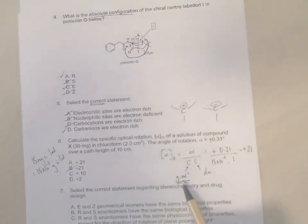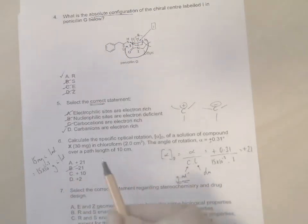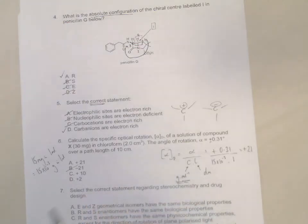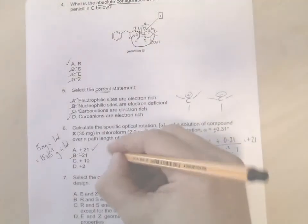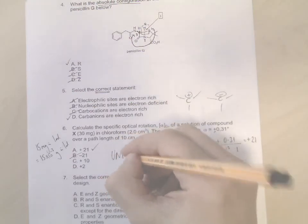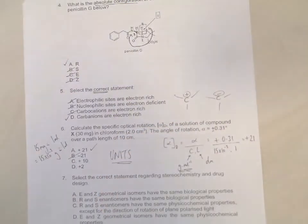If you have these units wrong, so if you get your concentration wrong or your path length wrong, then you may get one of the answers C or D. But in this particular case the answer is plus 21. So even if you get the right answer, don't assume it's correct - you must get your units right. So units are important for that question.